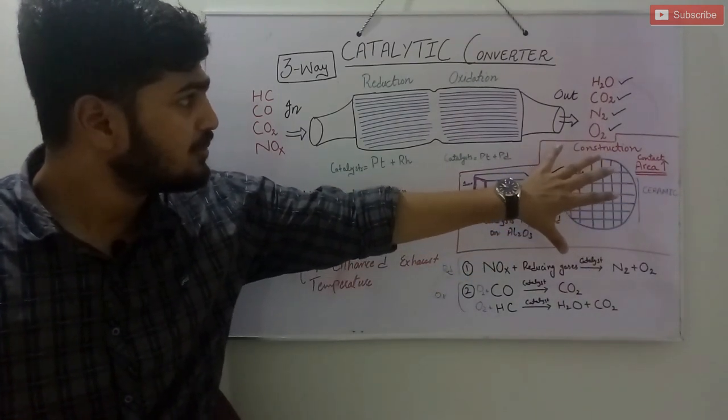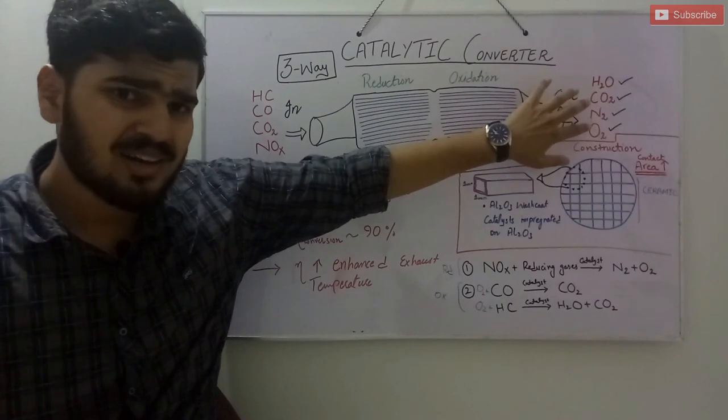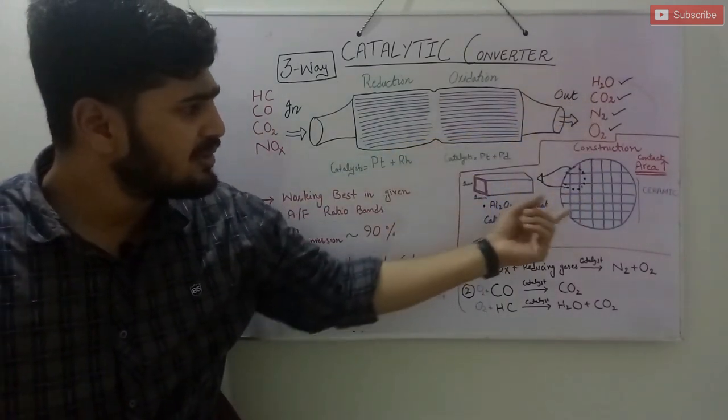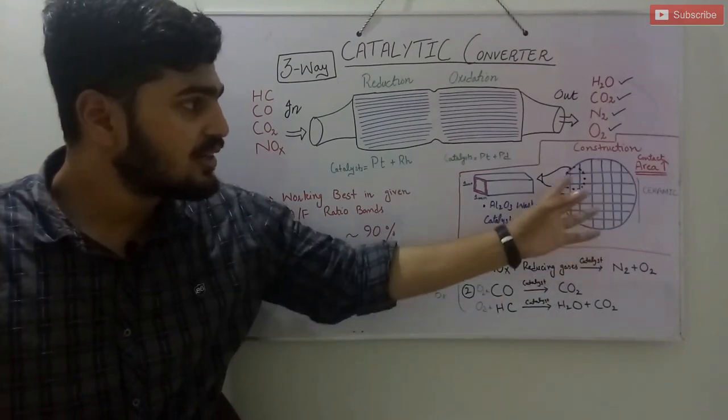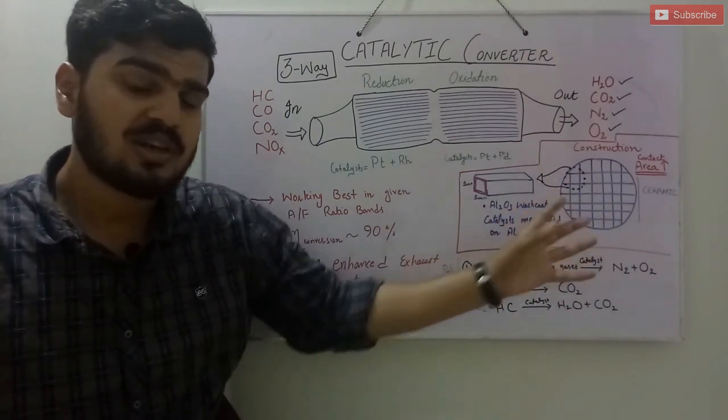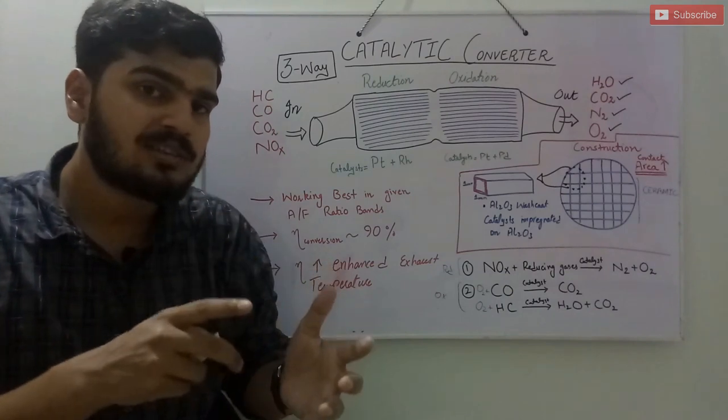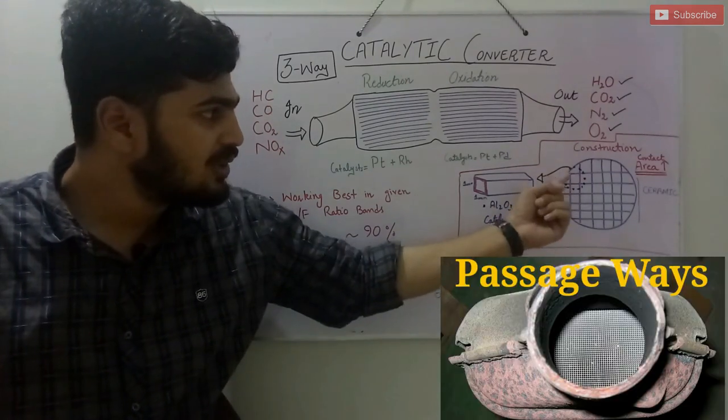If you look at the side of the catalytic converter, you will see these passageways are made of ceramic. This structure here is a square structure. It can also be a honeycomb-like structure.